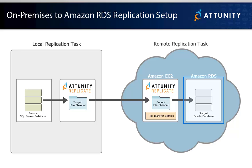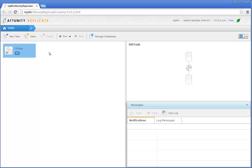To achieve the best possible transfer speeds between the local on-premises file channel and the remote cloud-based file channel, the Attunity file transfer service needs to be enabled on the remote Attunity Replicate server. Let's start by enabling the file transfer service on the remote Attunity Replicate server.